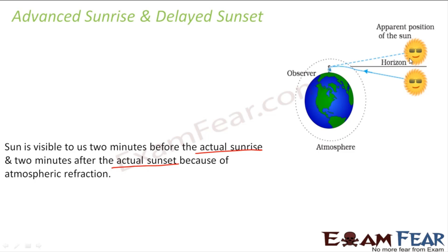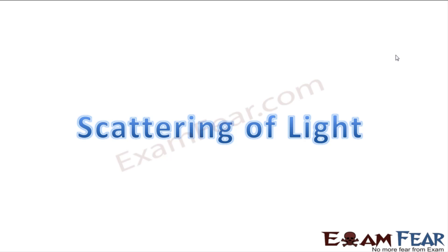After the sun goes below the horizon — actual sunset has taken place — the rays still reach our eye in such a way that we see the sun above the horizon. So we can still see the sun for another two minutes after actual sunset. This advanced sunrise and delayed sunset is because of atmospheric refraction. Now we will talk about another important phenomenon shown by light: scattering of light.